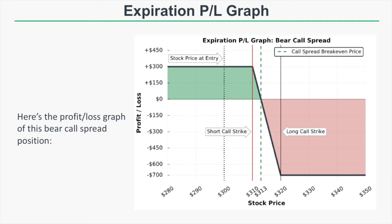Regarding the probability of profit: this spread has a greater than 50% probability of profit because it's an out-of-the-money call spread — both the short and long calls are above the current stock price of 300. The stock price can rise as much as $13 and we won't lose money. Another confirmation of the higher probability is that we can only make $300 but can lose as much as $700, so our loss potential being more than twice our profit potential means this spread has a higher probability of profit.